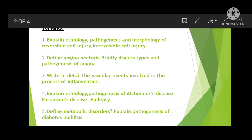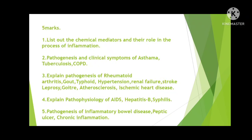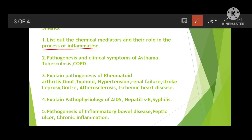Now let's discuss a very important five-mark question: list out the chemical mediators and their role in the process of inflammation. First write what inflammation is, give simple types — acute and chronic — and then write the chemical mediators and the role each plays in inflammation.